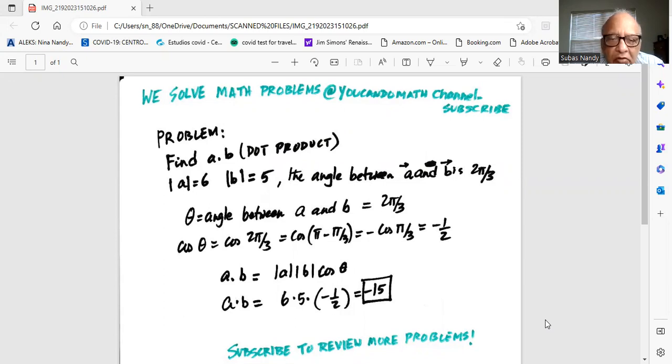So cosine of theta is cosine of 2π/3, which is cosine(π - π/3). This falls in the second quadrant where sine is the only trigonometric ratio that is positive. This will be minus cosine of π/3, which equals minus 1/2.